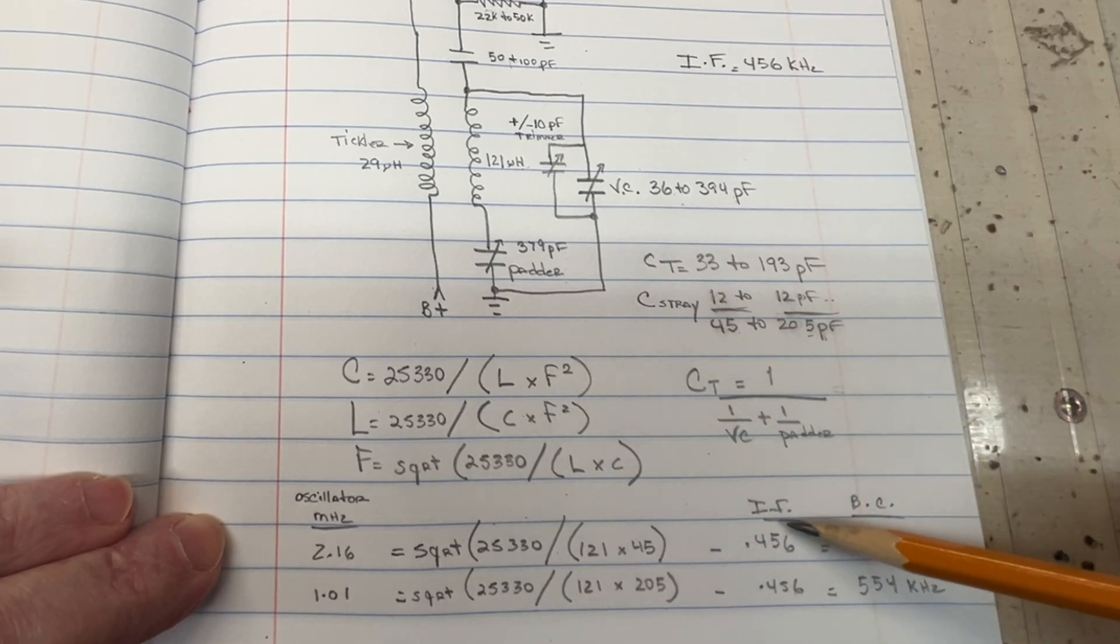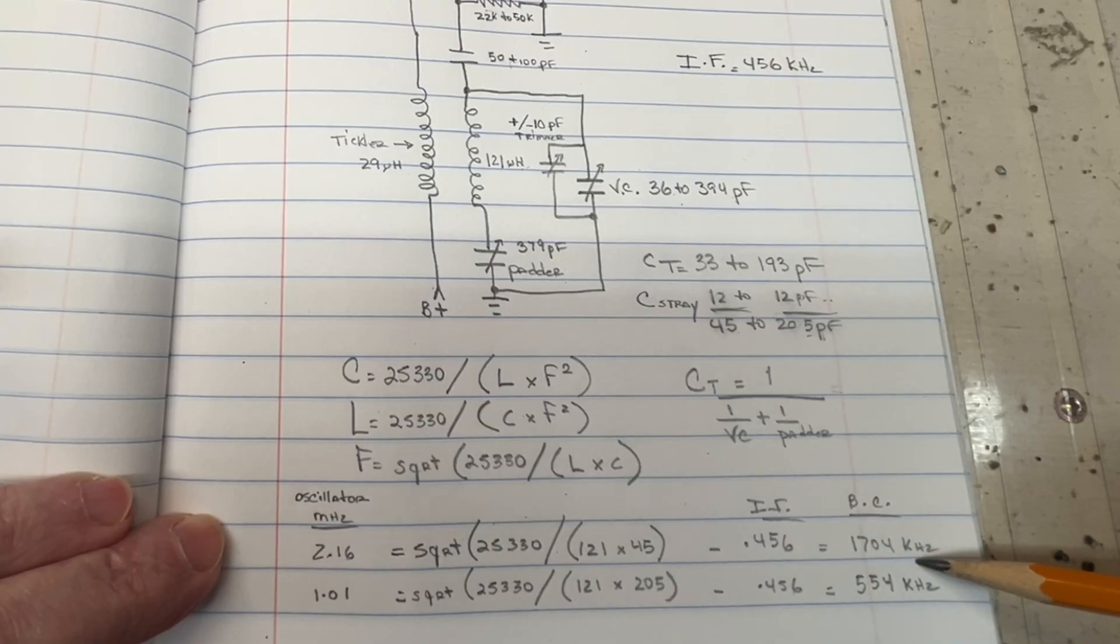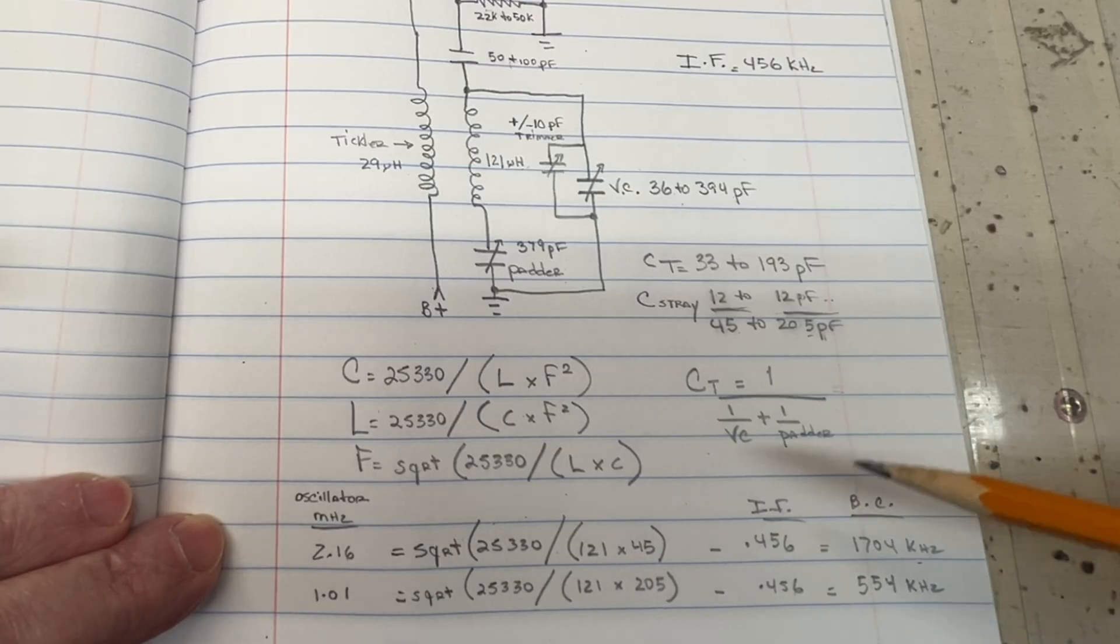If I subtract the IF frequency at 456, you can see that puts the broadcast band right where it needs to be, just a little north of 1700 kilohertz or kilocycles.